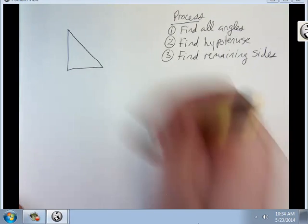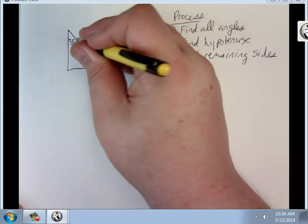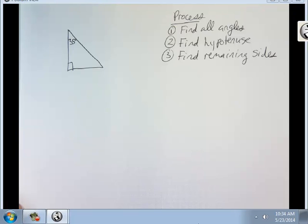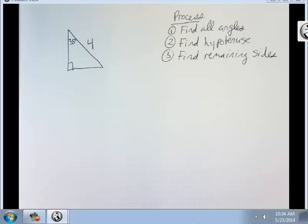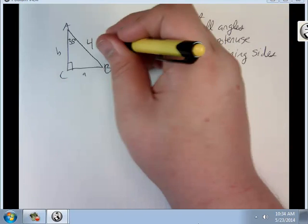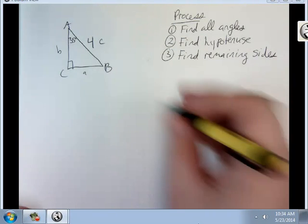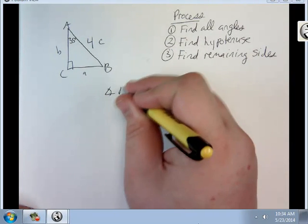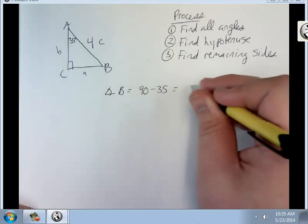So let's say we have 35 degrees here. There's my right angle. And let's say this is 4. And let's label this. So first thing I've got to do is find all my angles. Well, I only have one angle there. Angle B equals 90 minus 35, which is going to be 55. So that's first.